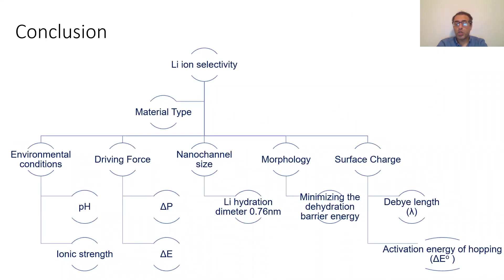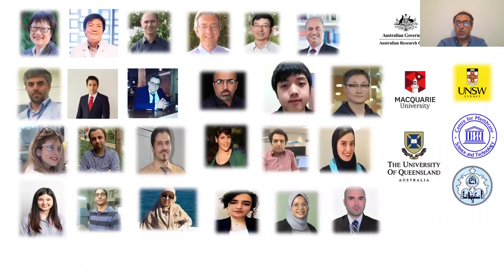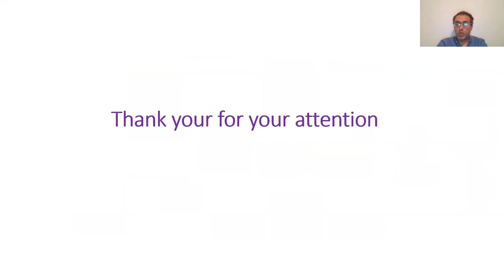In a nutshell, to make a lithium-selective membrane, the first step is selecting the right material, then tuning the morphology and surface chemistry of the nanochannels. Finally, driving force and environmental conditions need to be carefully adjusted to achieve a stable lithium-selective membrane. I would like to acknowledge all of our mentors, collaborators, postdocs, PhD students, and the ARC for funding this research, the University of Technology Sydney, and other organizations helping us drive this research forward. Thank you for your attention.